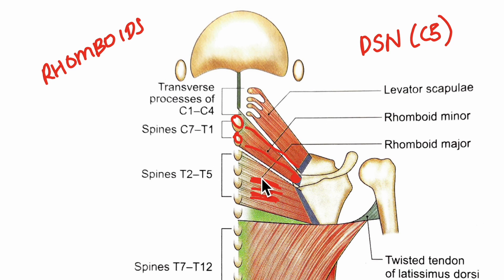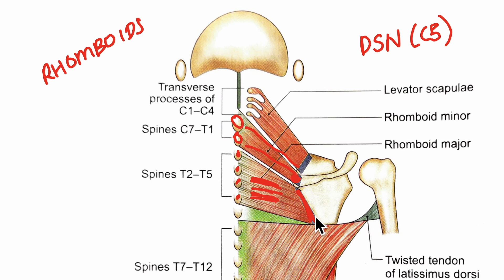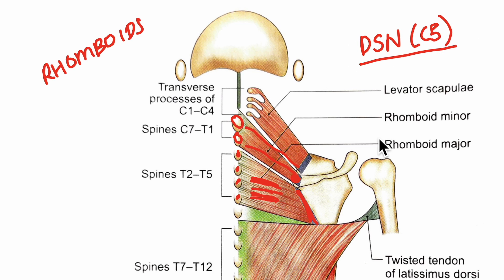Moving on to the rhomboid major muscle: it originates from the spines of the T2 to T5 thoracic vertebrae and it inserts onto the medial border of the scapula below the root of the spine. It is supplied by the dorsal scapular nerve — the C5 spinal nerve — and its action is similar to that of the rhomboid minor muscle, that is retraction of the scapula.